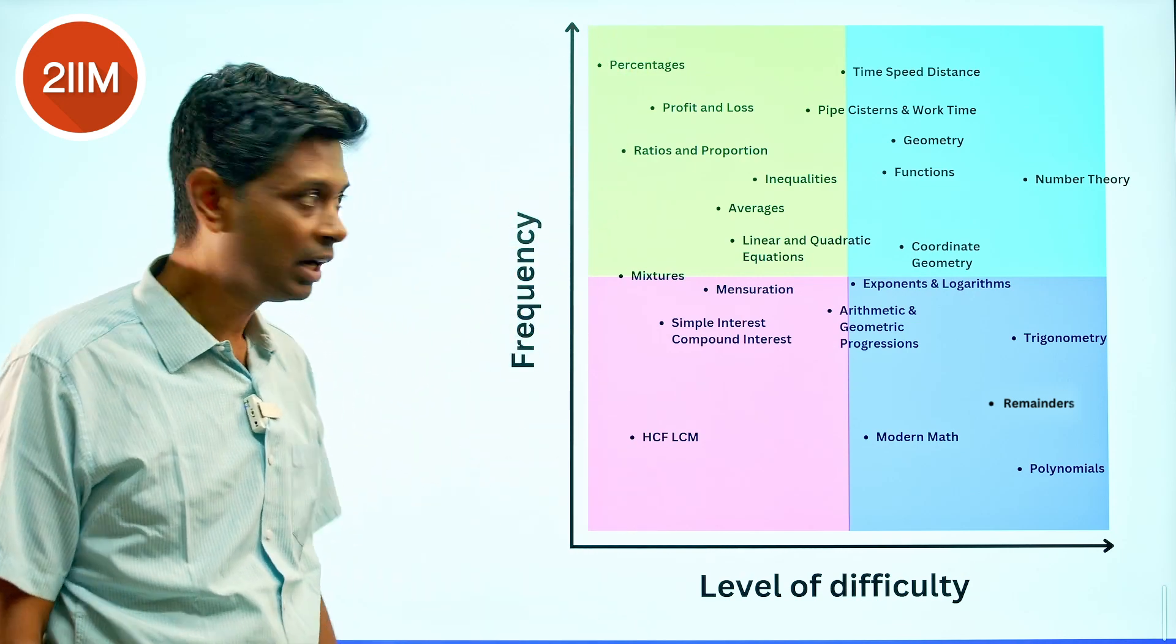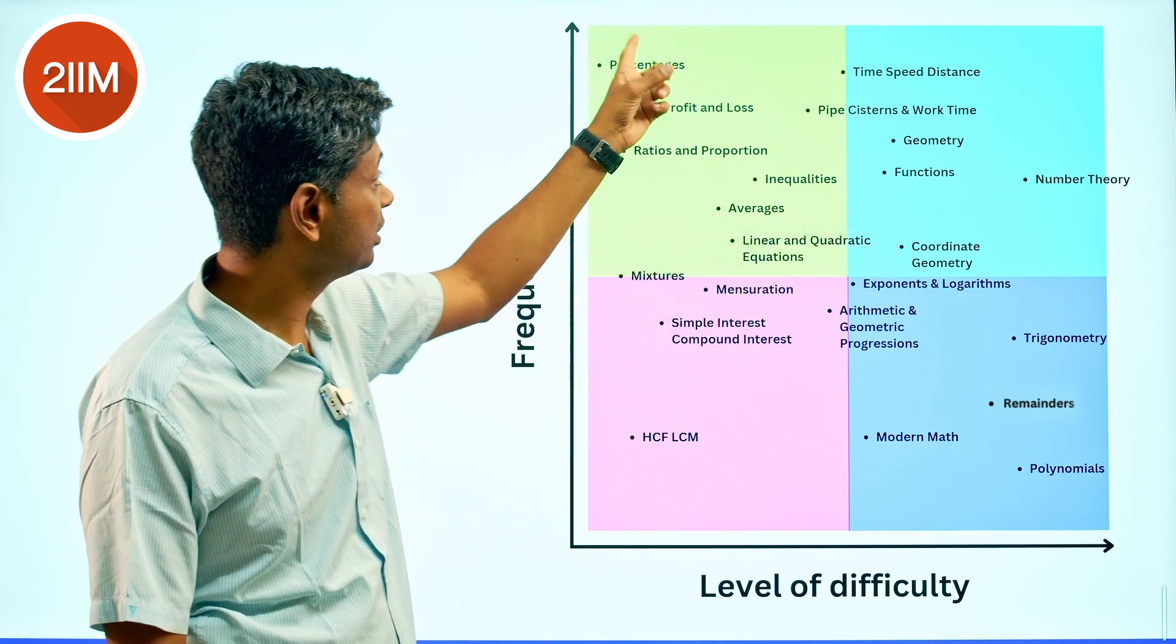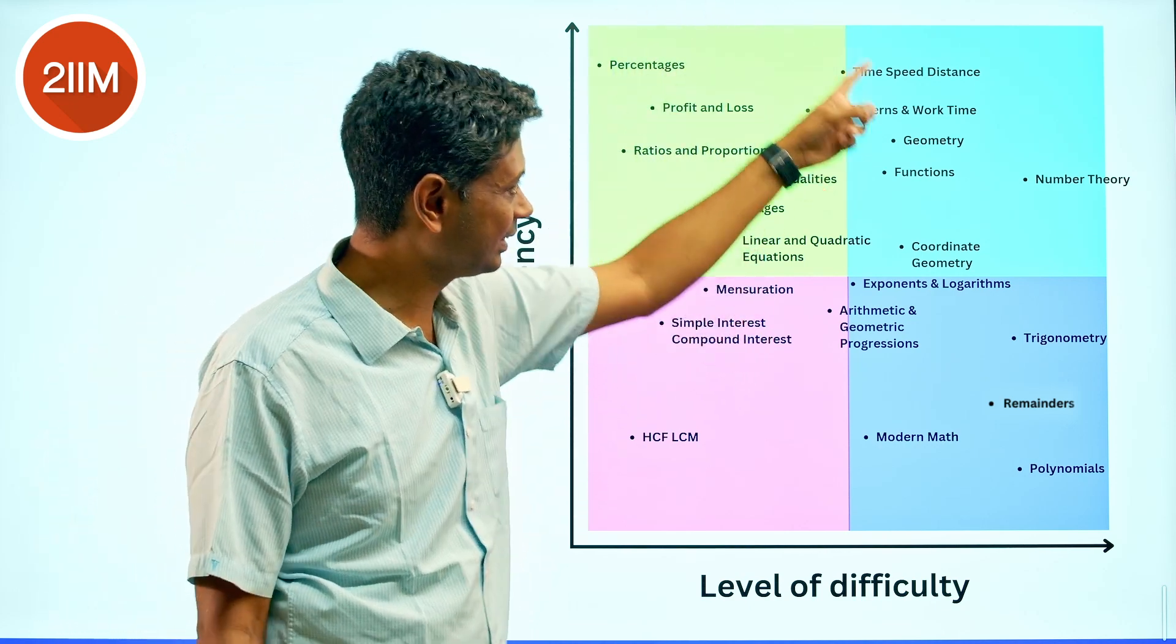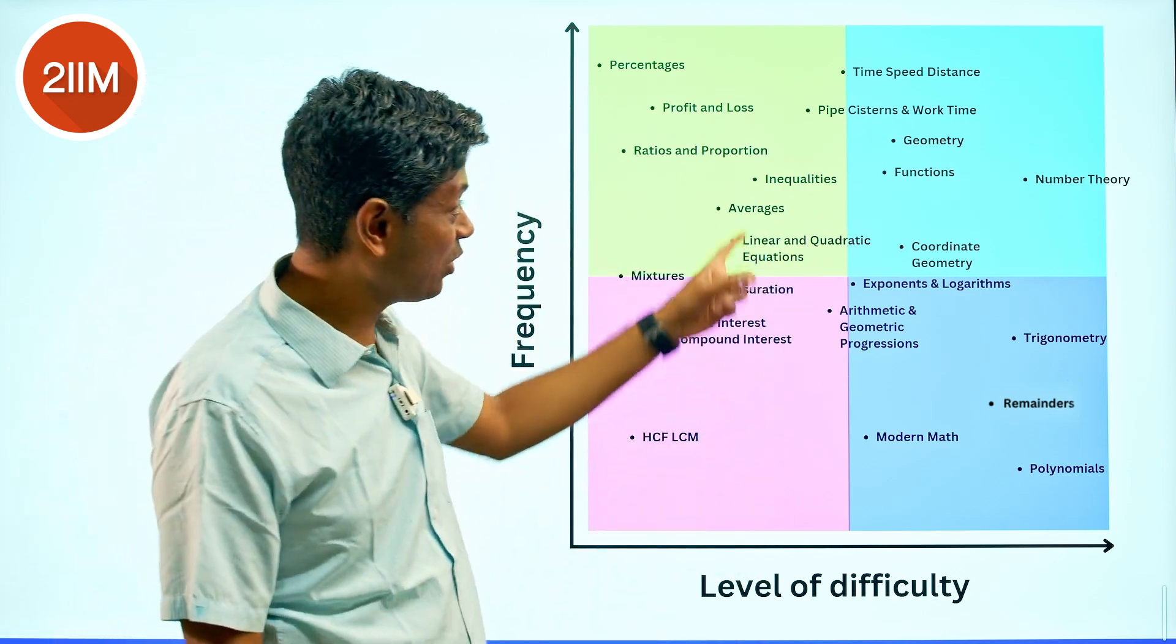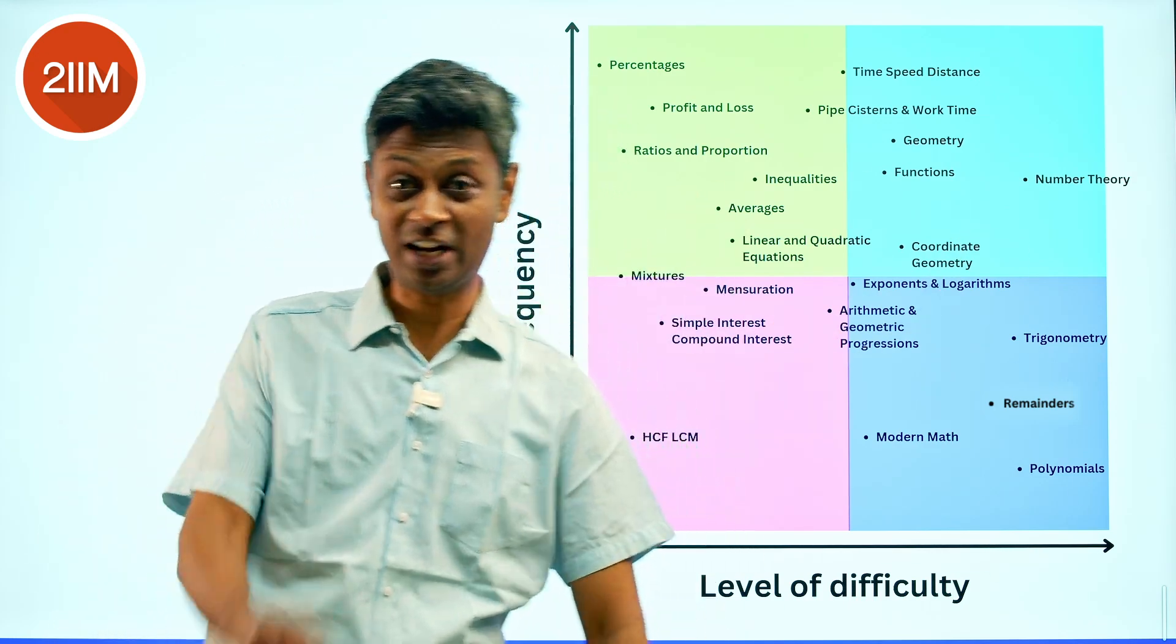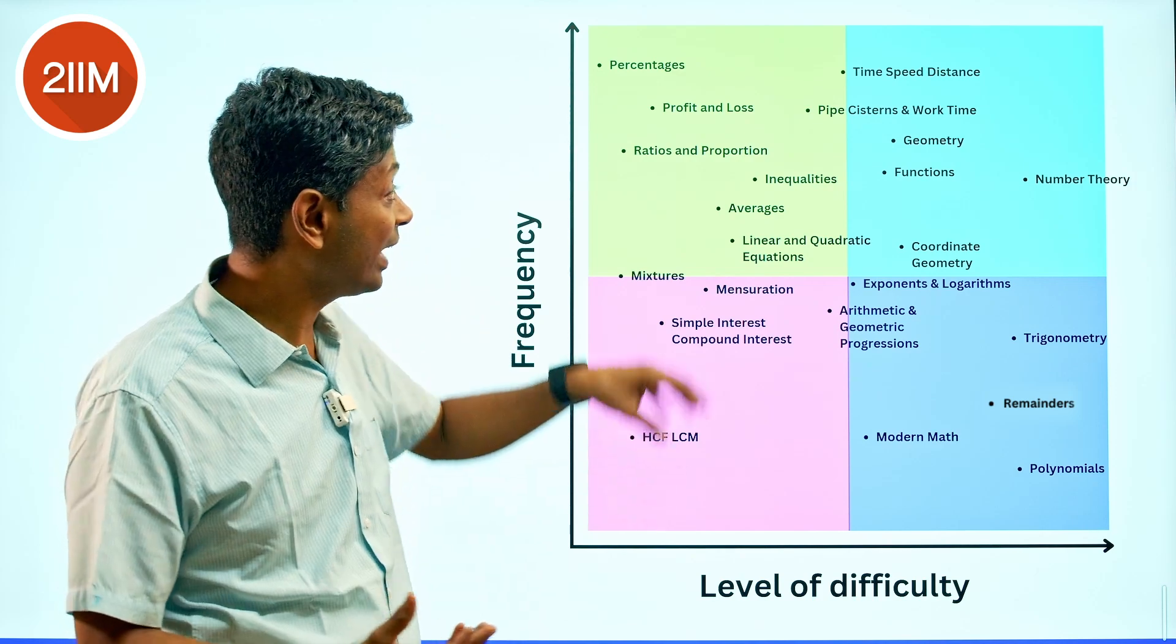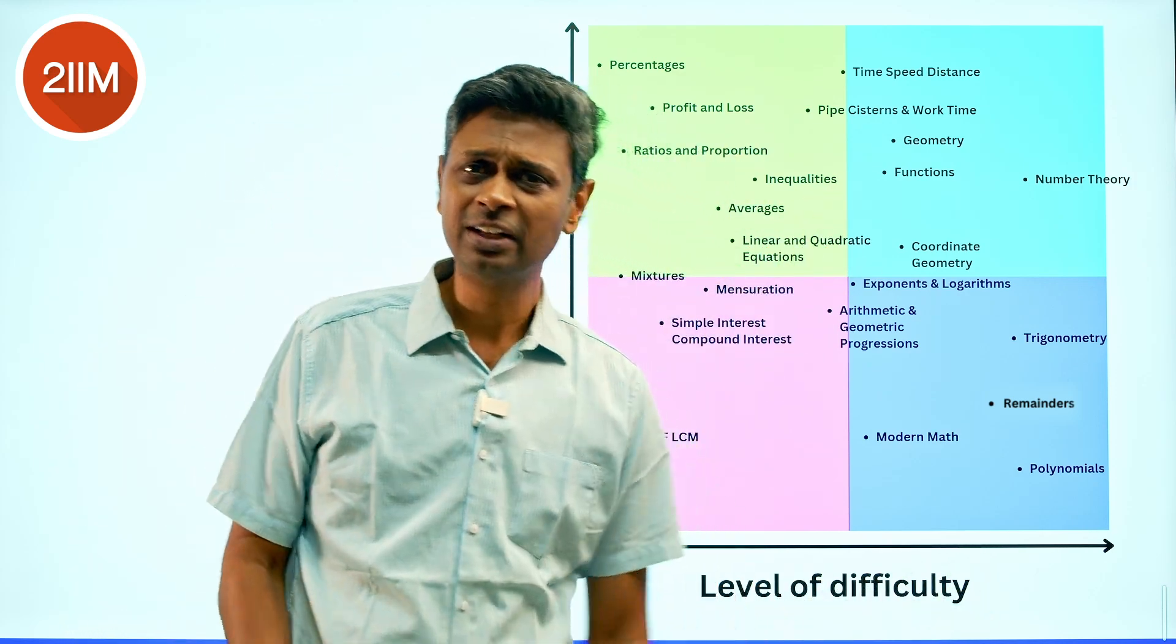This box here is my favorite - not that difficult and high frequency questions. You simply have to attack this set. I would look at percentages, profit and loss, ratio, proportion, averages, linear equations, mixtures, mensuration, pipes and cisterns, time-speed-distance. This box is my favorite. I've not really mentioned inequalities because in my head inequalities is a little more tougher. So this classification, I must tell you, was put up by a bunch of aspirants from IIM. I'm not totally in agreement with where each of these topics go as far as the level of difficulty is concerned.